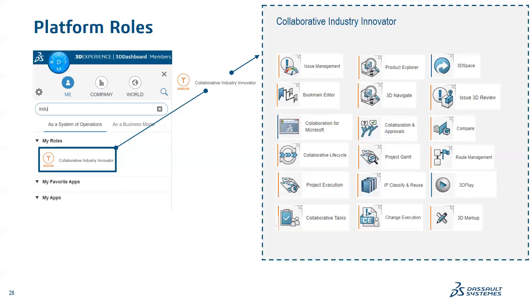Let's see the Collaborative Industry Innovator — the second backbone and second prerequisite of the 3D Experience Platform. This role is very helpful for enterprises to boost product information, enable time-to-market by enabling data sharing and collaboration in real time. Some fundamental applications inside this role are 3D Space, Bookmark Editor, Collaborative Task, and Issue Management. These are the fundamental tools I'll explore in today's session.